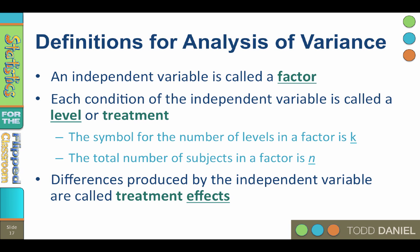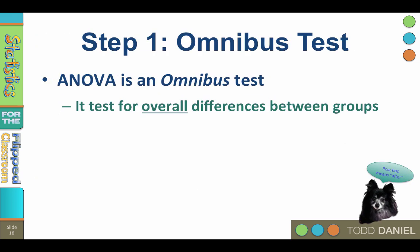Differences produced by the independent variable, such as the amount of exercise or the quantity of sleep, are called treatment effects and are revealed as the variance between. We do hypothesis testing with ANOVA in two steps: first we do the ANOVA, and then if we find statistically significant results, we do a follow-up test.